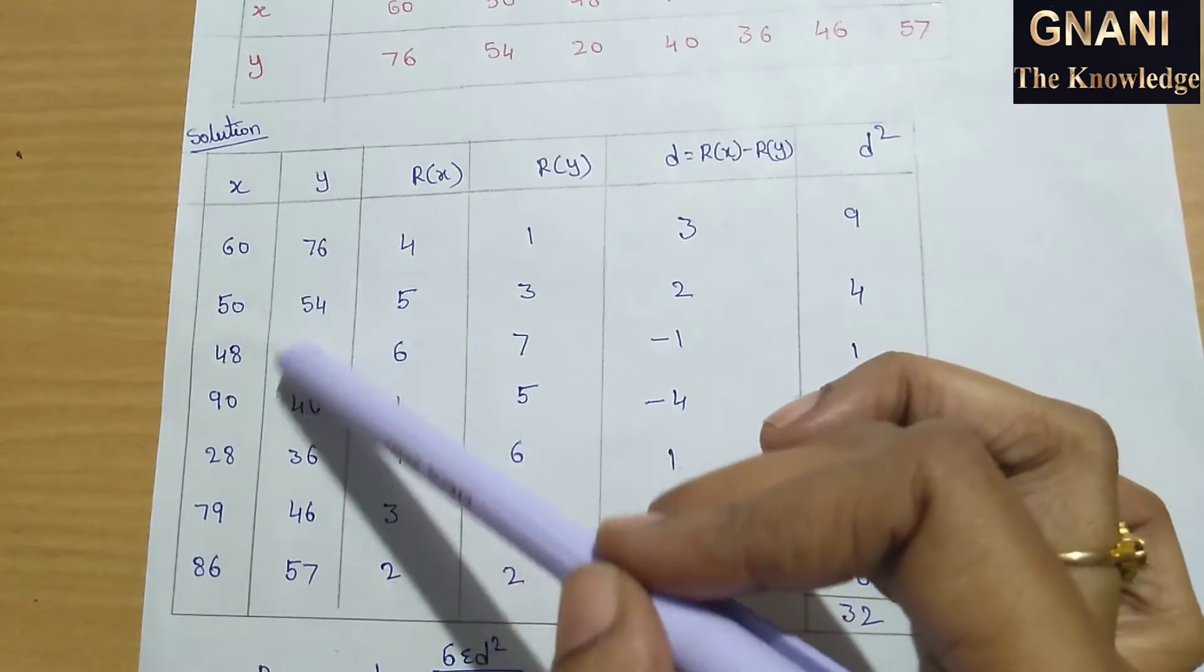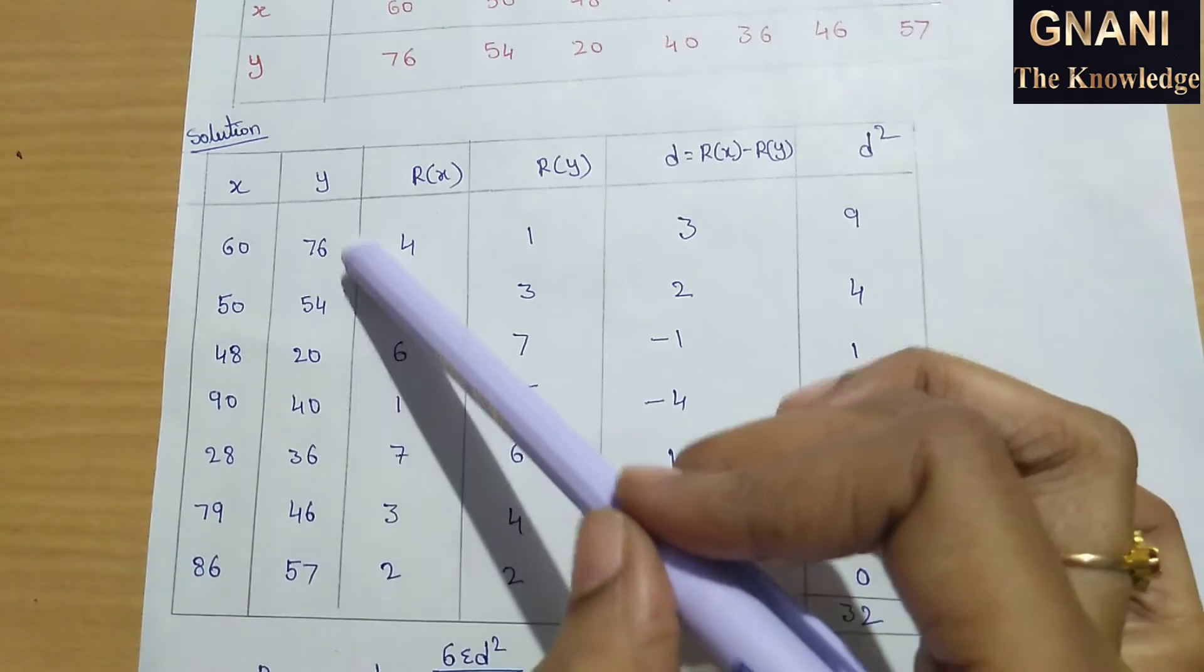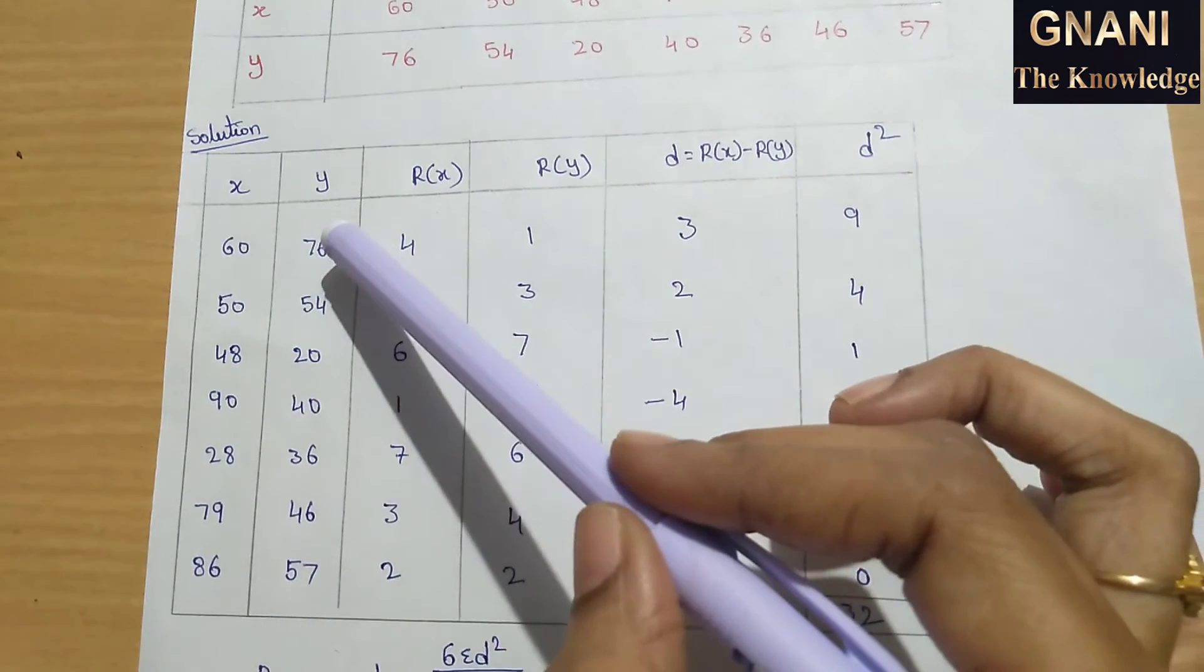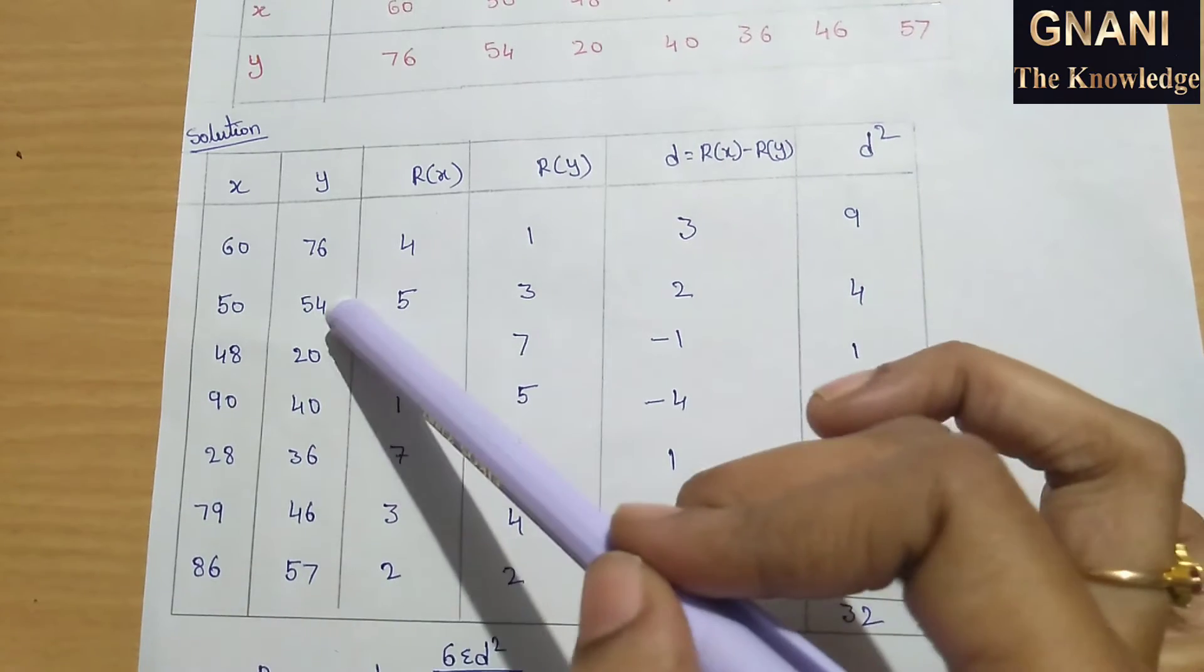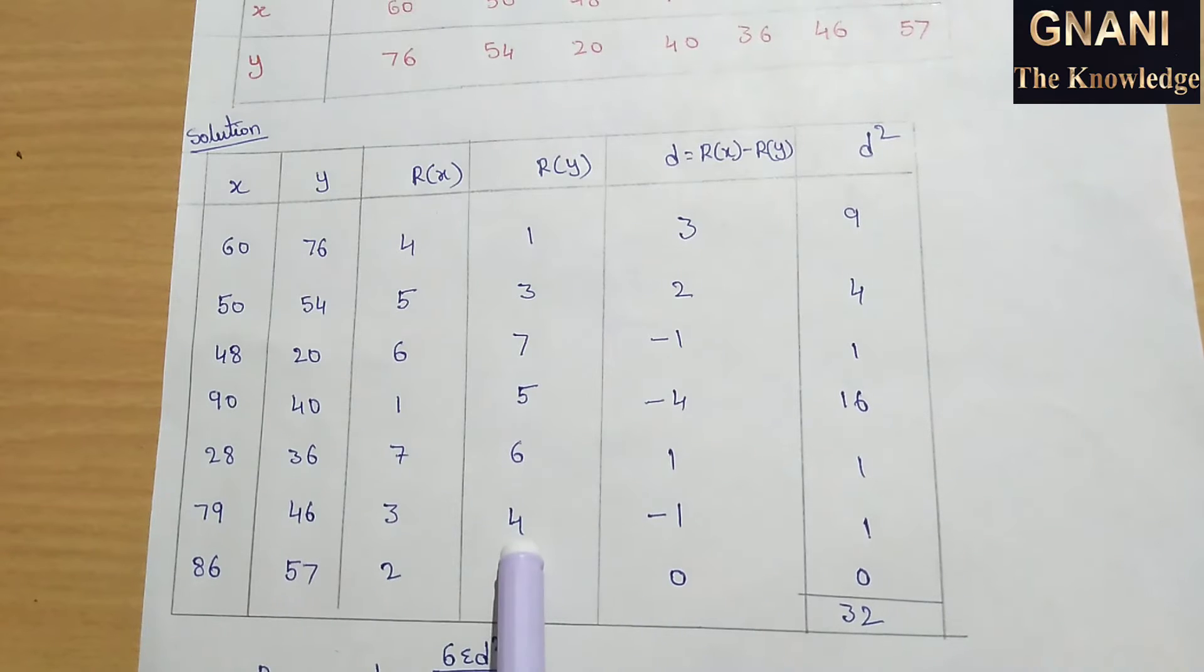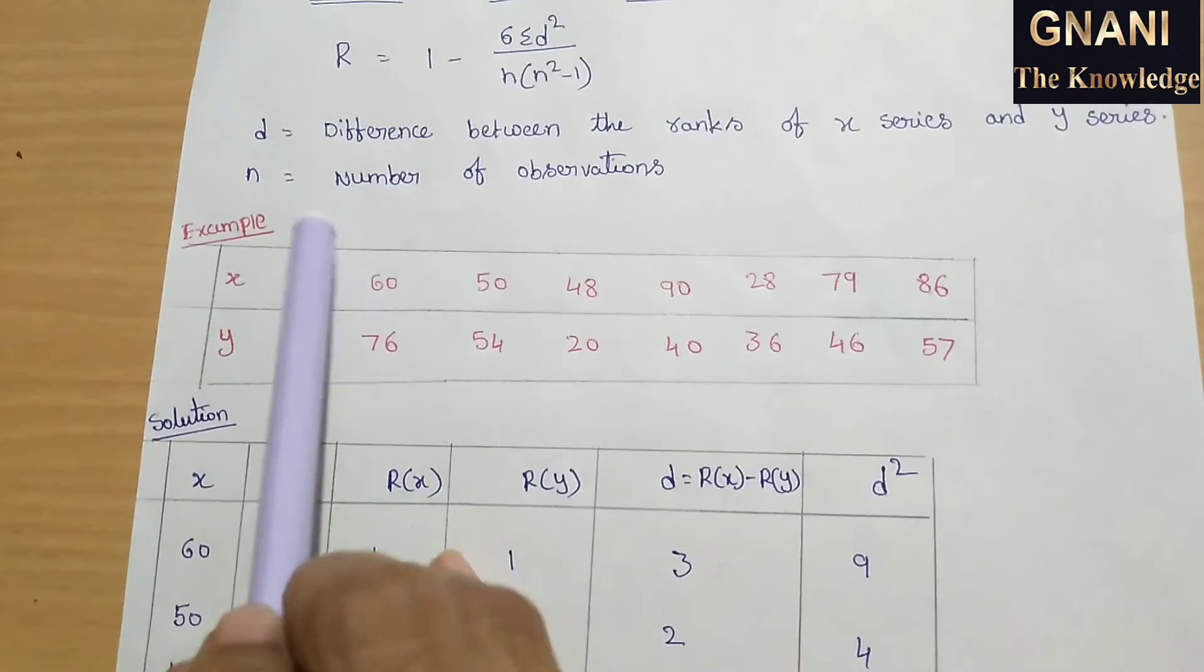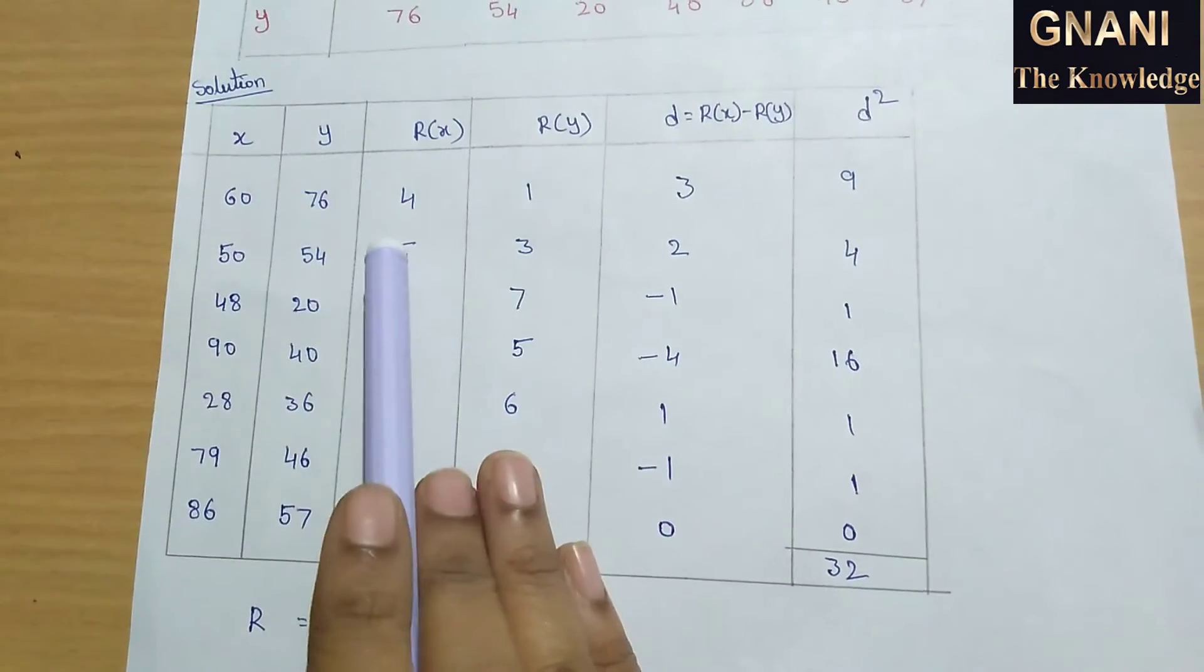Similarly, we calculate y series ranks. 76 gets first rank, 57 gets second rank, 54 gets third rank, 46 gets fourth rank, 40 gets fifth rank, 36 gets sixth rank, 20 gets seventh rank. Now for d, we have the difference between the ranks of x series and y series.